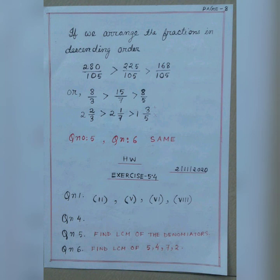For homework, from exercise 5.4, solve question numbers 1, 2, 4, 5, 6, and 8. You can use any method — cross multiplication or by finding LCM and then comparing numerators. Try to solve question numbers 4, 5, and 6. This is all for the day. Have a great day. Thank you.